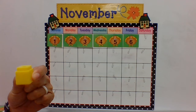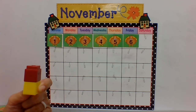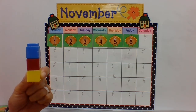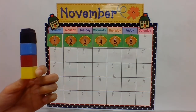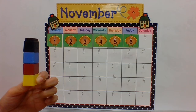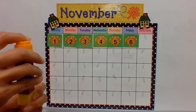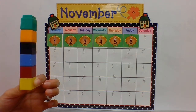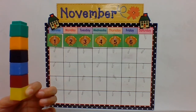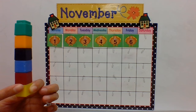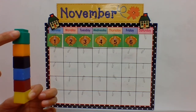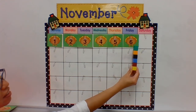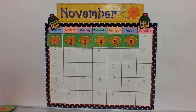One, two, three, four, five, six! We stack six blocks for the number six — for November 6th. Let's count them: one, two, three, four, five, six — six blocks for the number six! Have a good Friday, boys and girls.